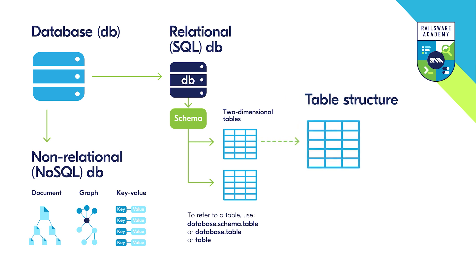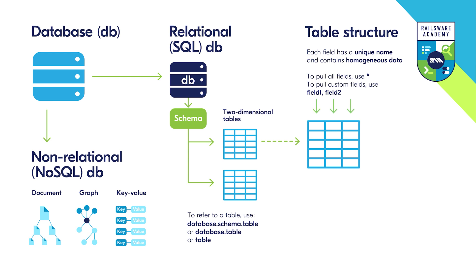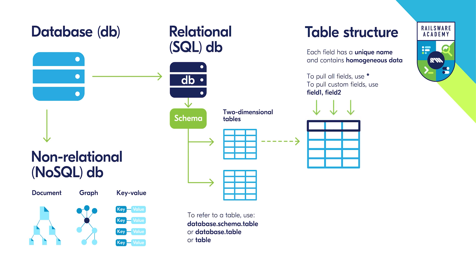Each table consists of columns and rows. A column should have its own unique name, which we will reference in our SQL queries. To pull multiple columns from a database, you can use a comma-separated list: column1, column2, column3, and so on. To pull all columns, you can use an asterisk.